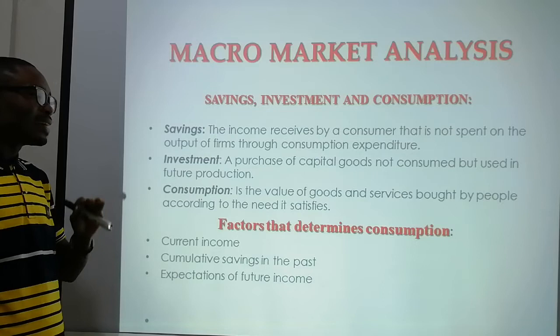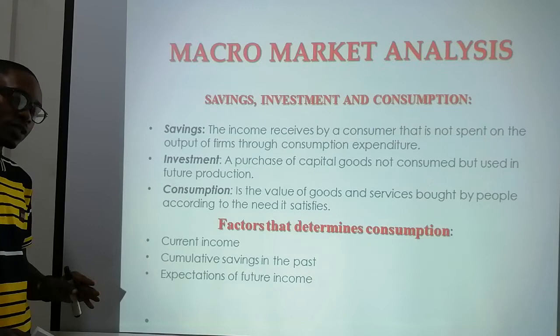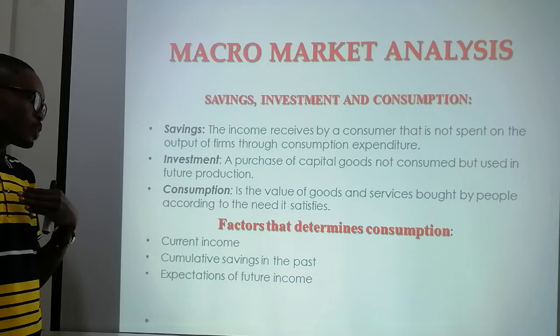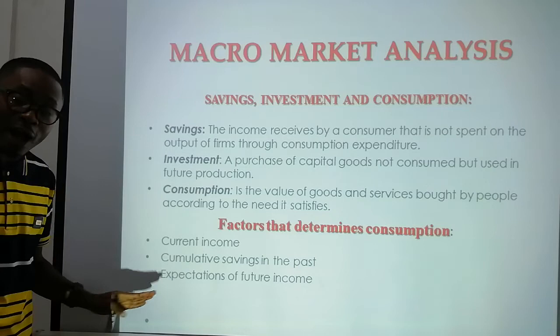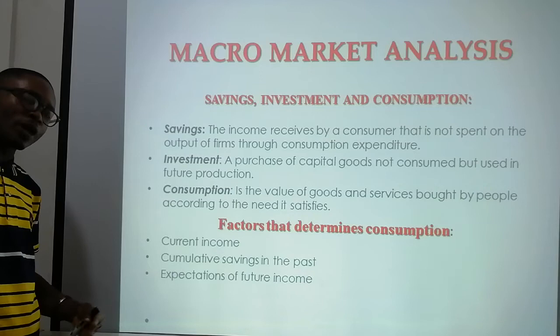Factors that help consumption include accumulating a certain amount of income, saving in the past towards purchasing a certain product you want, and expectations of future income — you can consume because you expect that a certain amount of income will come. For example, if you know you will be paid in one month or two weeks' time, you can go to the shop and commit to a purchase.